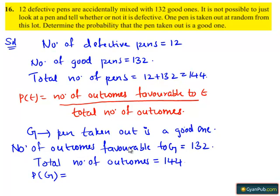Divided by total number of pens which is 144. Here, 12 is a common factor of both numerator and denominator. 12 goes in 132 eleven times and 12 goes in 144 twelve times.